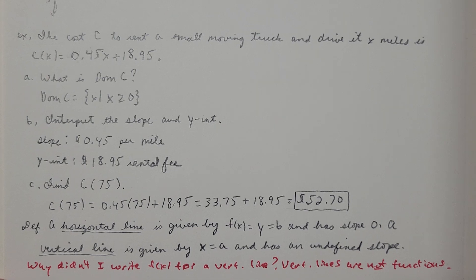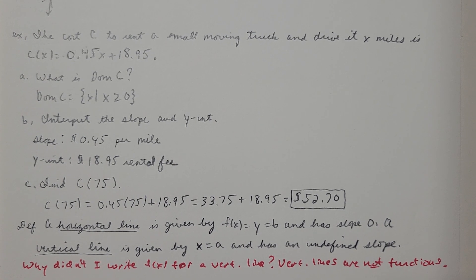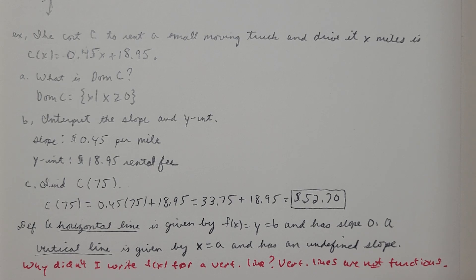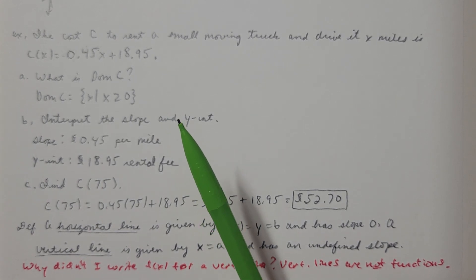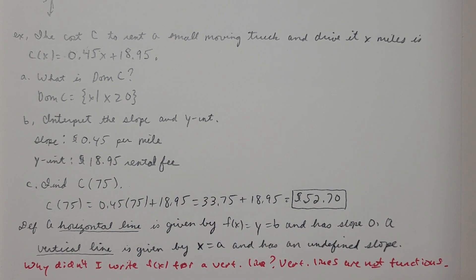Here's a story problem involving lines. The cost C to rent a small moving truck and drive x miles is C(x) equals 0.45x plus 18.95. We want to know the domain of C. The domain represents all valid x values. Since x represents miles driven, I can't drive negative miles, so x must be zero or greater.